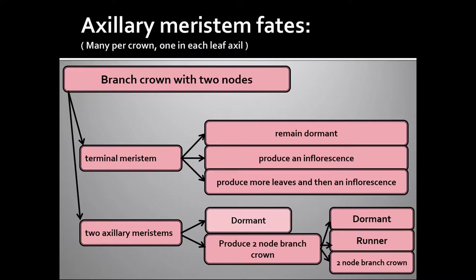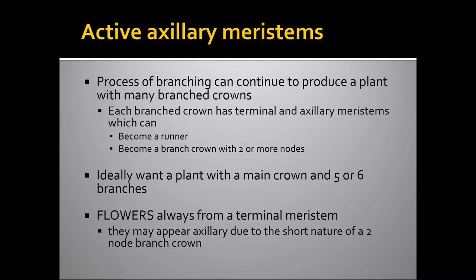And that two-node branch crown can remain dormant, can form a runner, or stay as a two-node branch crown with a terminal meristem and two axillary meristems. This process of branching can continue to produce a plant that has many branch crowns. Each branch would have a terminal meristem and axillary meristems. Those axillary meristems can become a runner or become a branch crown with two or more nodes. Ideally, for the plastic culture system, you want a plant with the main crown and five or six branches. The thing to remember is that flowers are always from a terminal meristem, whether it's the terminal meristem of the main crown or the terminal meristem of an axillary branch crown.